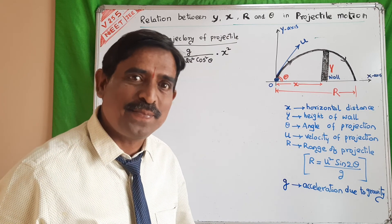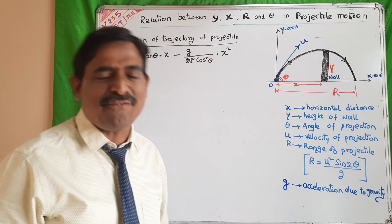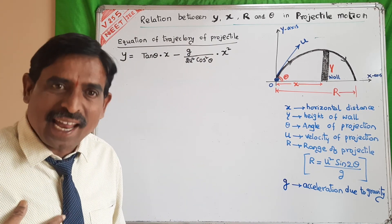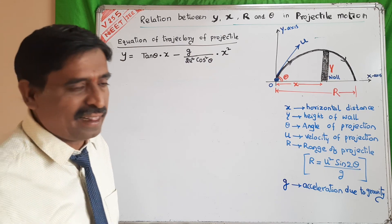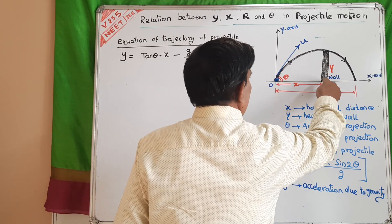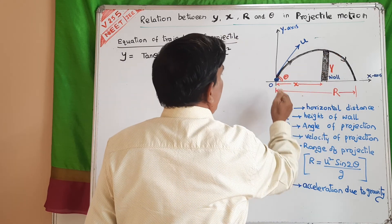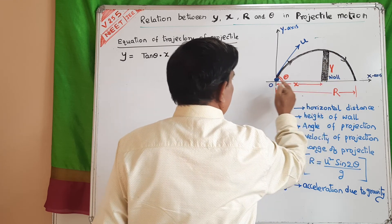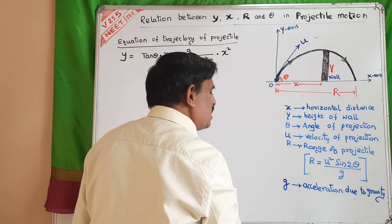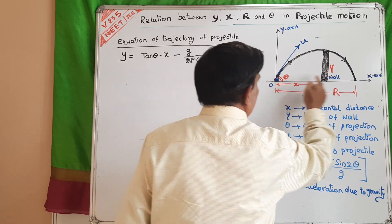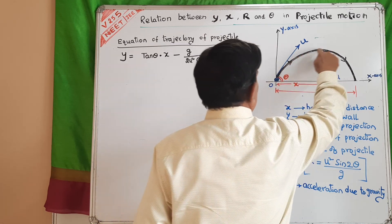My name is M. Narasimha Rao, lecturer in Physics. Today, I am explaining the relation between the vertical distance y — otherwise the height of the wall — and horizontal distance x, which is the distance of the wall from the point of projection, and the horizontal range of the projectile motion.